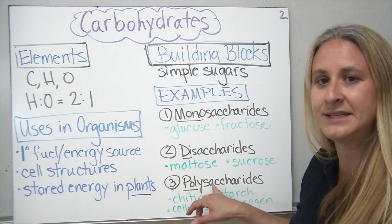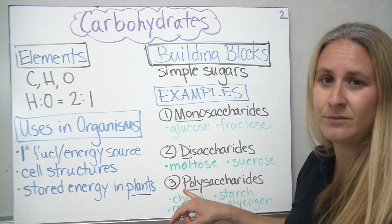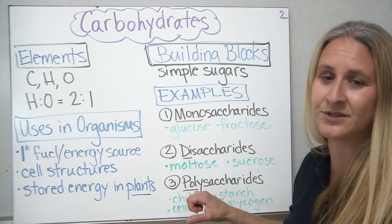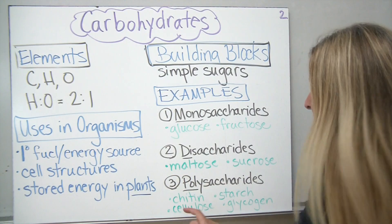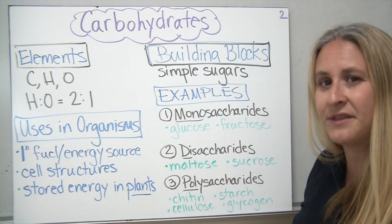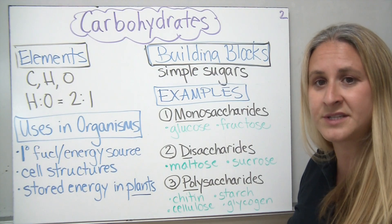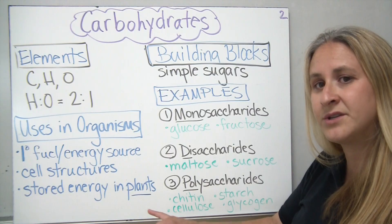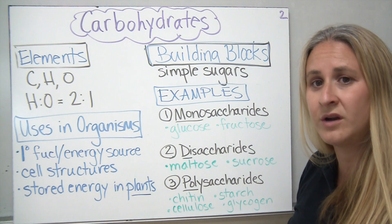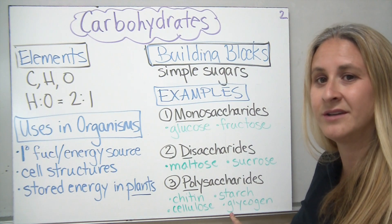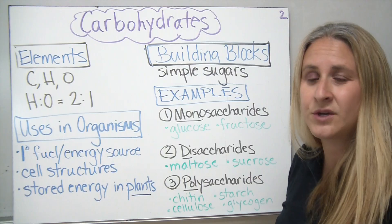The third class of carbohydrates are polysaccharides — 'poly' means many, and polysaccharides will have at least three sugars put together. Examples of polysaccharides in living things include chitin, which makes up the exoskeleton of things like lobsters and shrimp; starch, the stored energy in plants; cellulose, which makes up the cell wall in plants; and glycogen, which is what humans store as extra carbohydrates in their liver as a quick energy reserve.